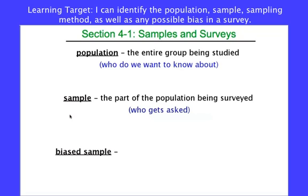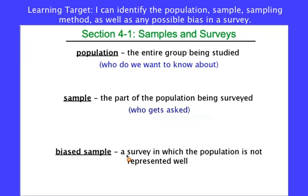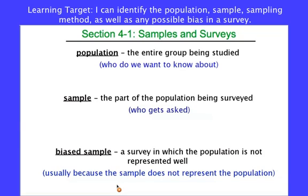The sample is really who gets asked — this isn't everyone. Where we run into trouble is when we take a sample but it doesn't necessarily represent the entire population. In our survey about broccoli, if they only asked seventh graders, or only took this survey during second lunch, that leaves out everybody from other teams plus all eighth graders. So you don't really get a full picture, and what occurs is a biased sample — a survey in which the population is not represented well.